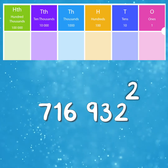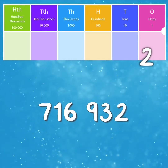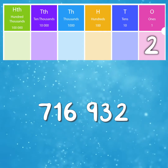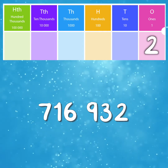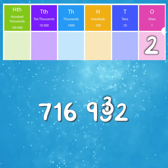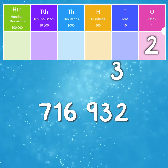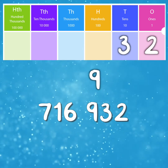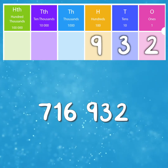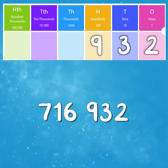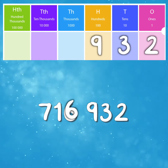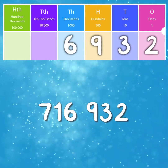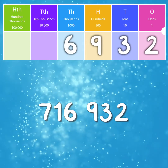Starting from the right, we have a 2 in the 1s column, which means the value of the digit 2 is 2 ones. Moving over, we have a 3 in the 10s column, which means we have 3 tens. We have a 9 in the 100s column, so the value of the digit 9 is 900. We have a 6 in the 1000s column, which means we have 6 thousands.